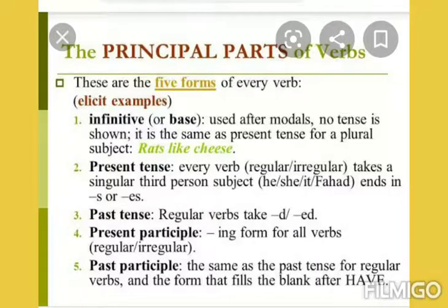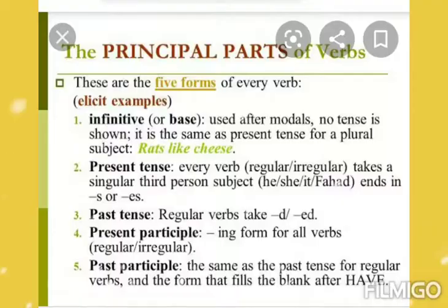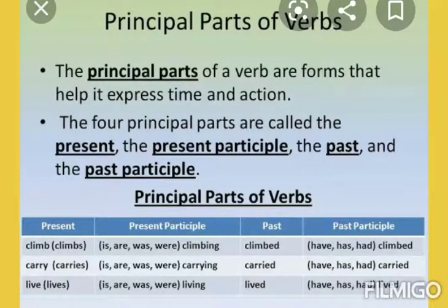We are going to discuss the principal parts of verb. They have five forms. First is your infinitive or base form, which is used after modals — no tense is shown. It is the same as present tense for a plural subject. For example, 'Rats like cheese' — here 'like' is your base form of verb. If used with singular, it becomes 'likes'; with plural it remains the same. In tenses, we form present tense by adding S or ES, and past tense by adding D or ED.